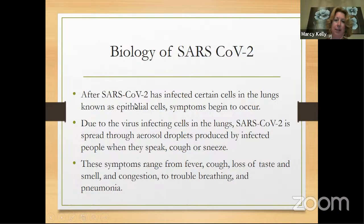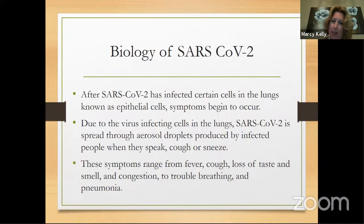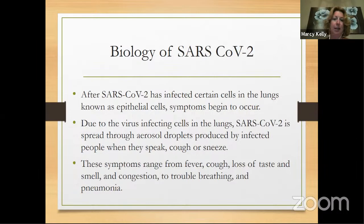After SARS-CoV-2 infects the lungs, if you're to become symptomatic, that's when you'll start to get symptoms. It spreads through aerosolized droplets when people speak, cough, or sneeze. The symptoms associated with the original Wuhan/alpha variant can range from asymptomatic to fever, cough, loss of taste and smell, and congestion, to more severe problems including trouble breathing, pneumonia, and unfortunately mortality.